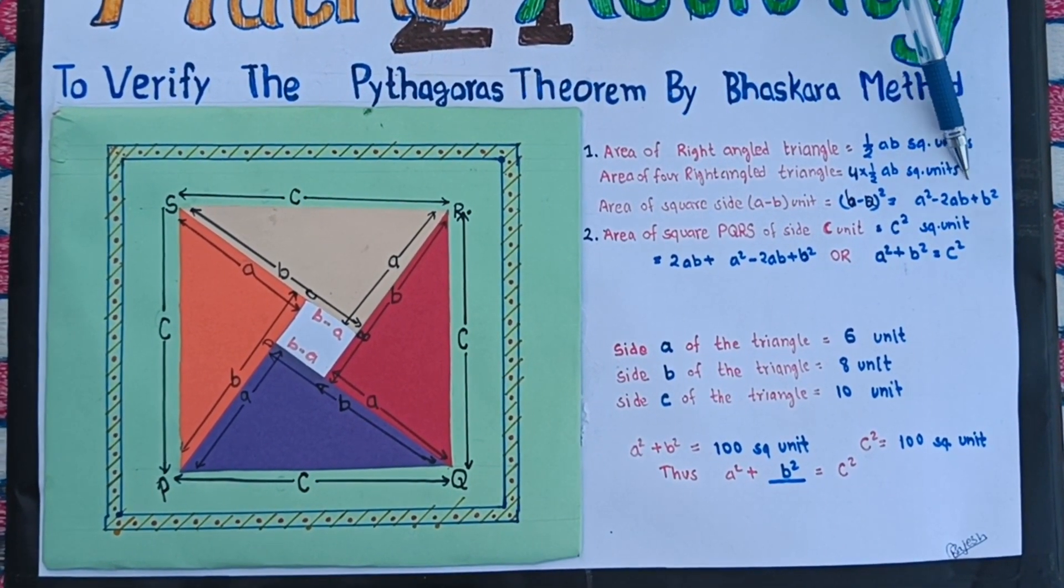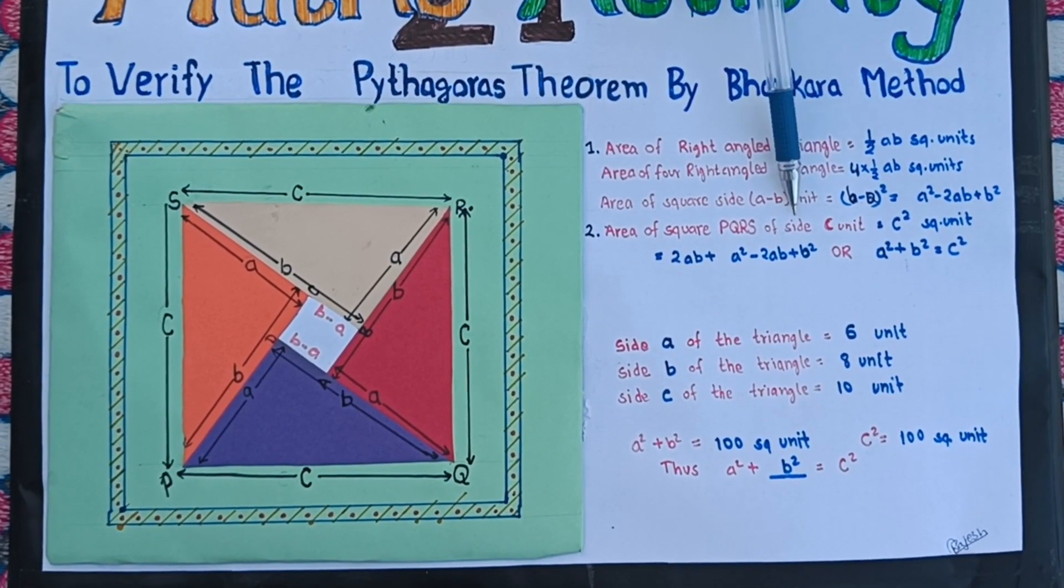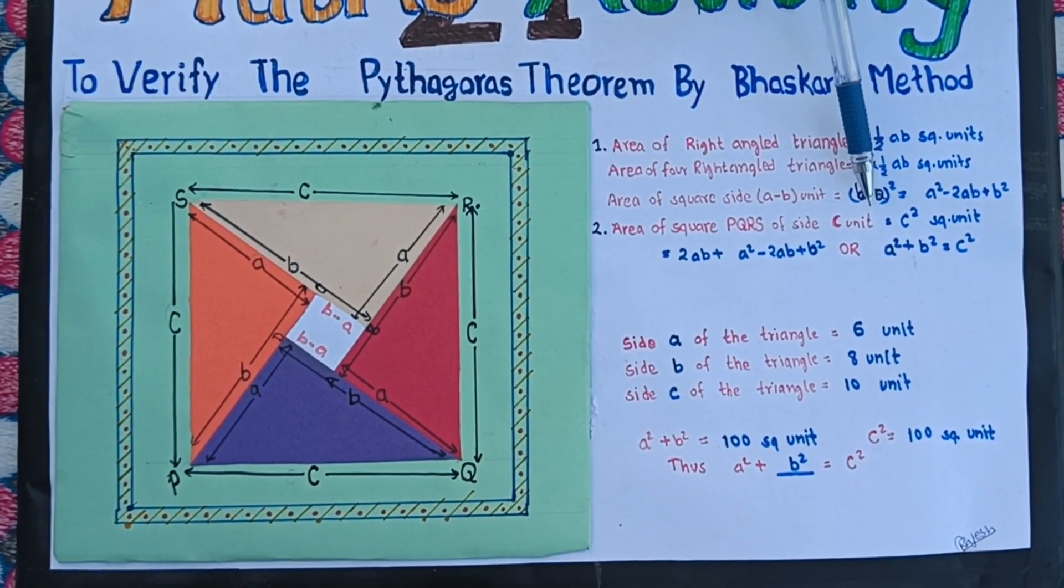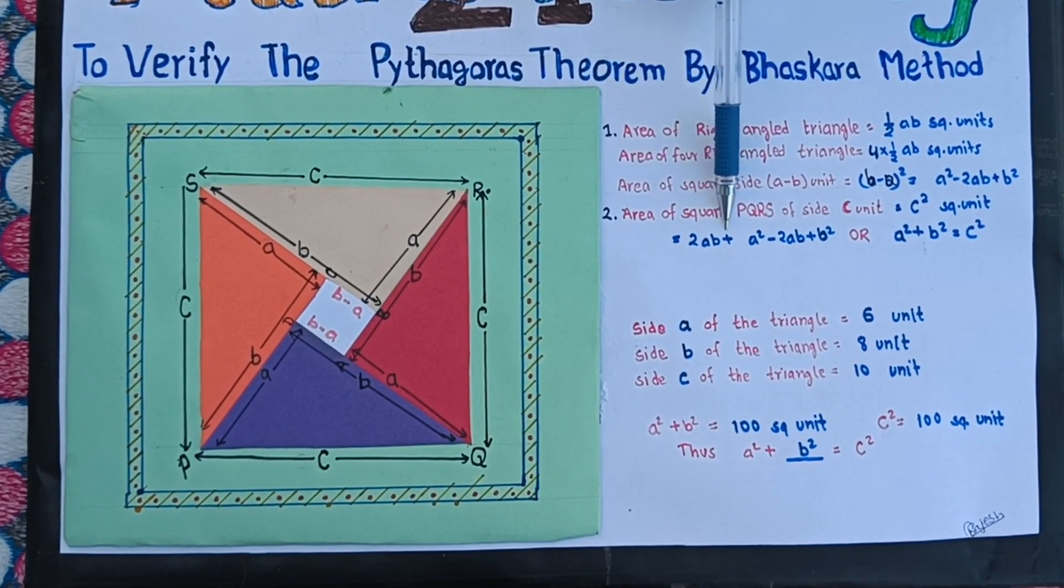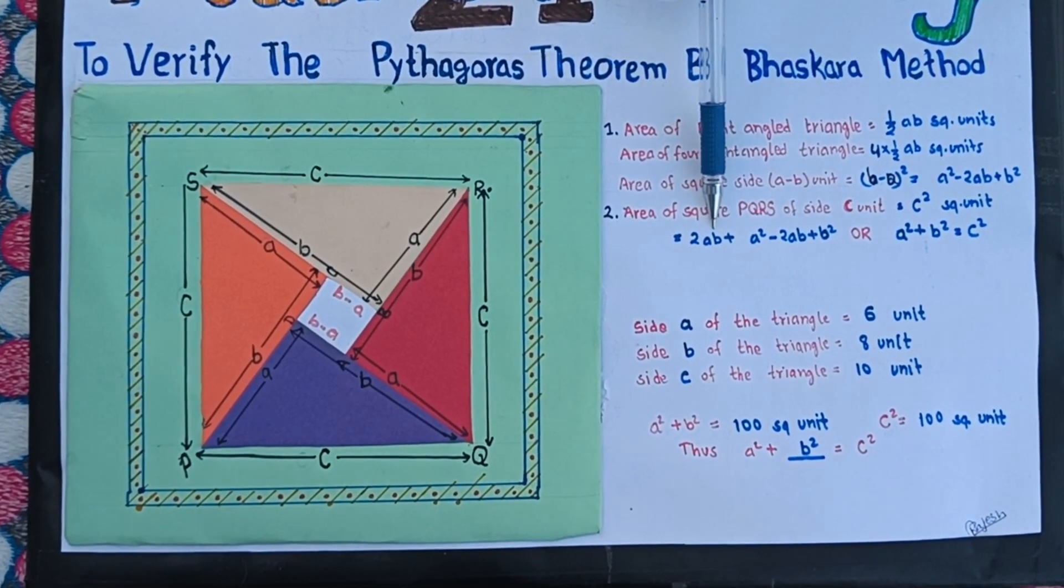If we add the area of four right-angled triangles and the area of inner square, we get the area of square PQRS.